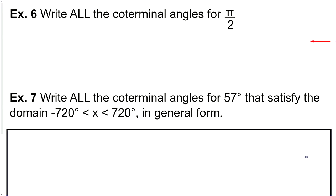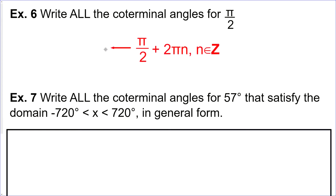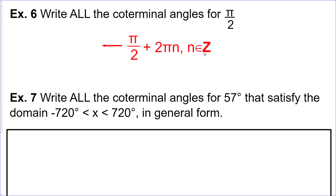Example six: write all the co-terminal angles for π/2. This is a radian measurement, so instead of adding 360 degrees, we're going to add a full rotation in radians, which is 2π. So all the co-terminal angles for π/2 are: π/2 + 2πn, where n is an integer.